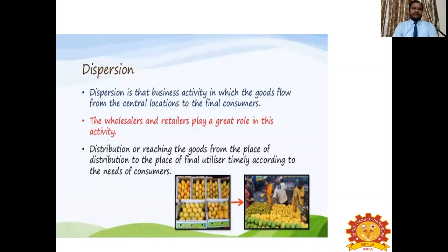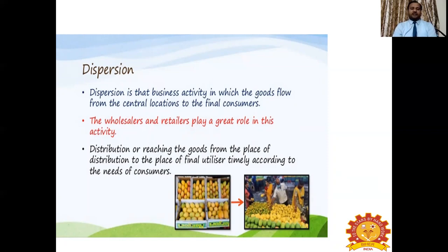The next process is dispersion. Now the product has been brought to a central place. After getting it to the central place, we have given different standards based on qualitative characters followed by grading. After such activity, we have to disperse this product to the final consumers. Dispersion is the business activity in which goods flow from the central location to the final consumer. Concentration brings the product to a center place; now from the center place, the product is dispersed to different final consumers.